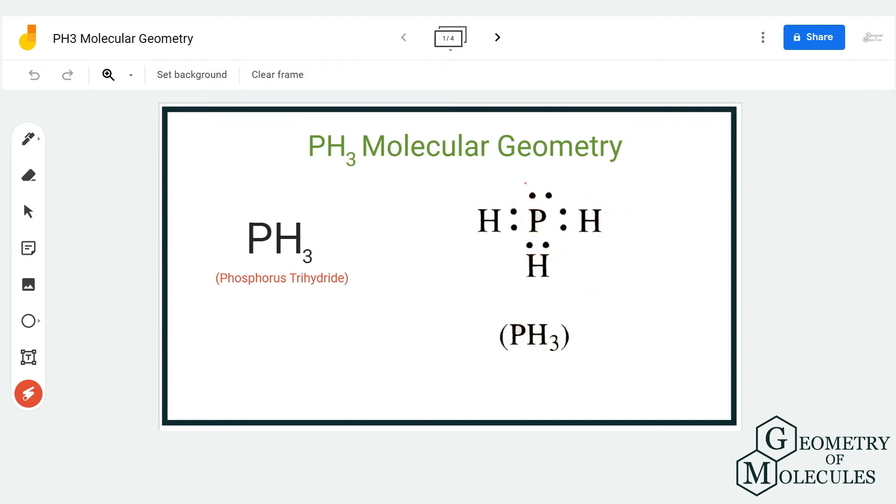To find out the steric number you basically need to count the number of electron regions around it. So here as it is bonding with three hydrogen atoms, that's three, and there is one lone pair over here, so four. The steric number of this molecule is four.